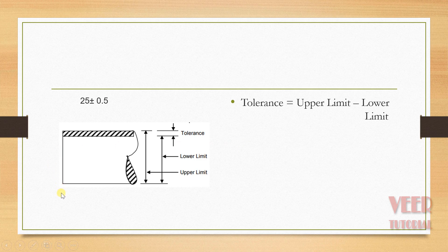So in this example we can see we have a maximum value that is called upper limit, and then we have a minimum value that is called lower limit. The upper limit is up to this arrow and the lower limit is up to this below position. The difference between this upper limit and the lower limit is called tolerance. We can calculate this tolerance using the formula: upper limit minus lower limit.